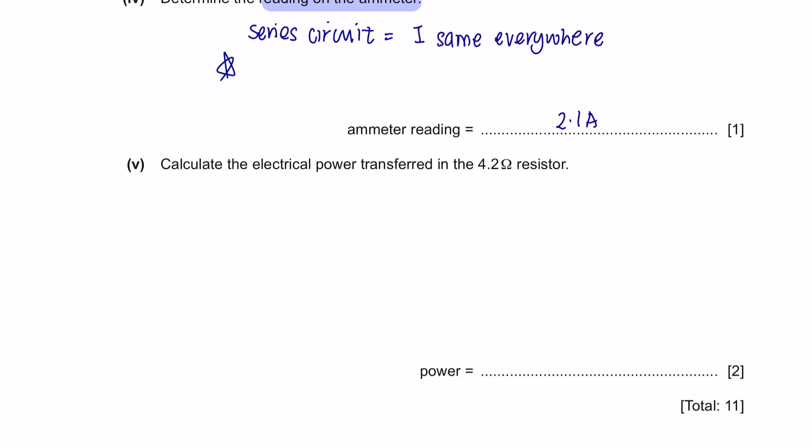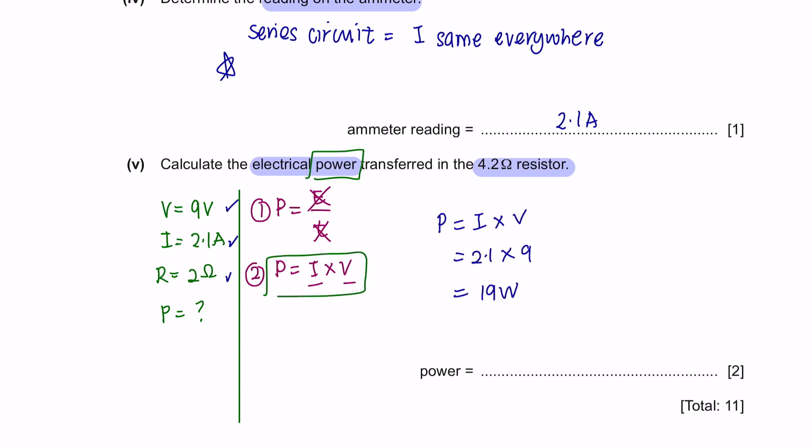Part 5, calculate the electrical power transferred in the 4.2 resistor. Let's first list down all the information that we have. We are looking to find power and we have voltage, current and resistor. We do not have energy or time, but we have current and voltage, therefore we can use this formula. The answer is 19 watts. Do not forget that your final answer should always be in 2 significant figures and you must write your units.